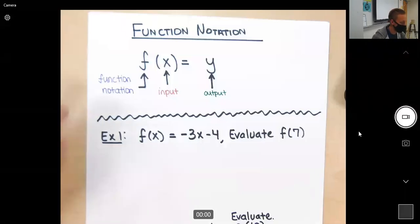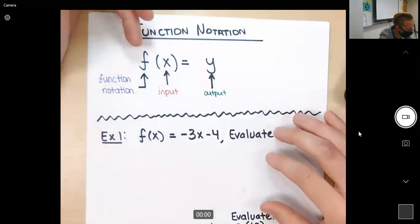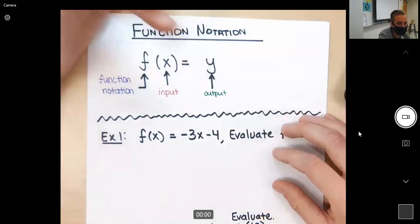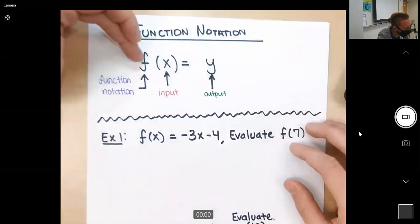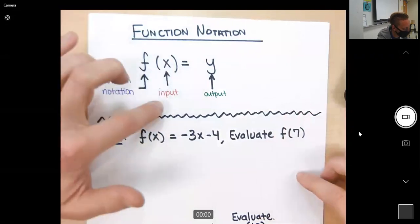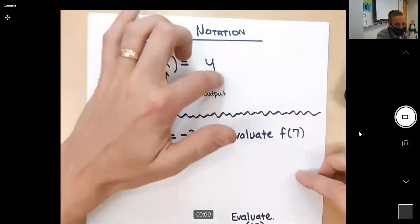Okay, welcome back. We are doing function notation, which is going to be a key thing that we see in Algebra 1. It's pretty simple. The way we would read this is f(x) equals y. The f is what makes it function notation. The way we need to break this down is the x is the input and the y is going to be the output.